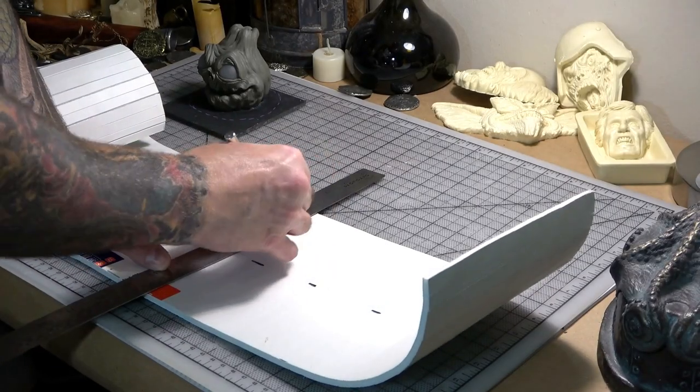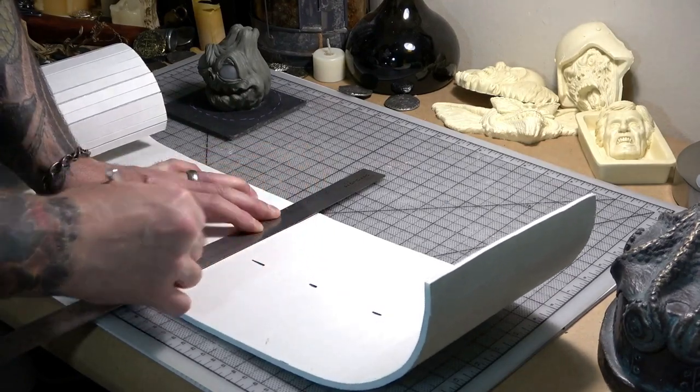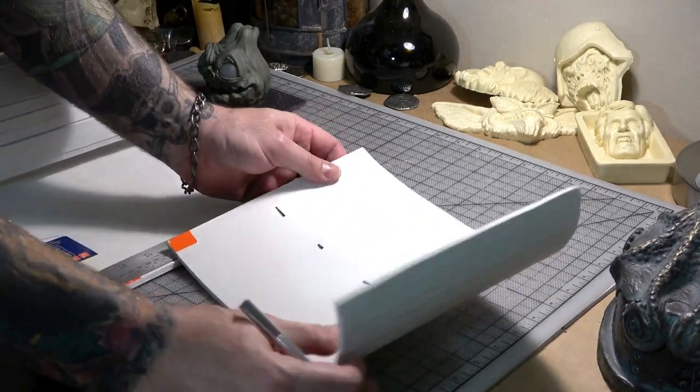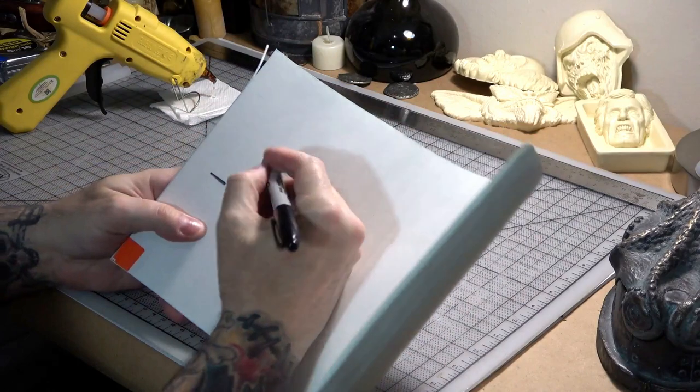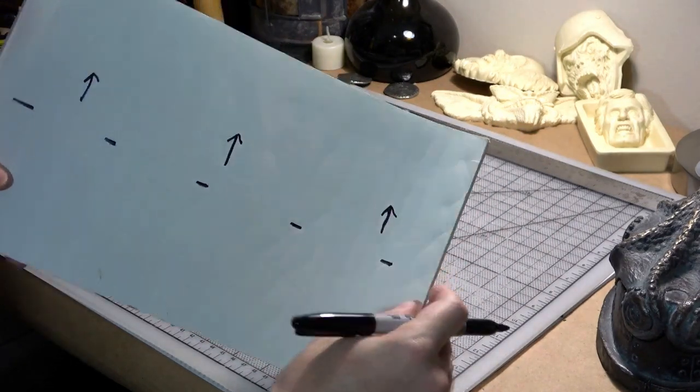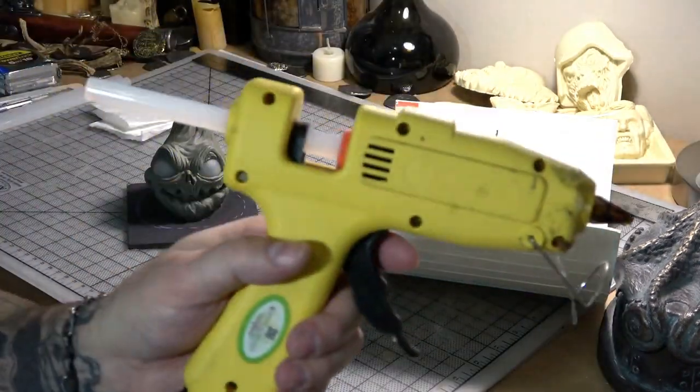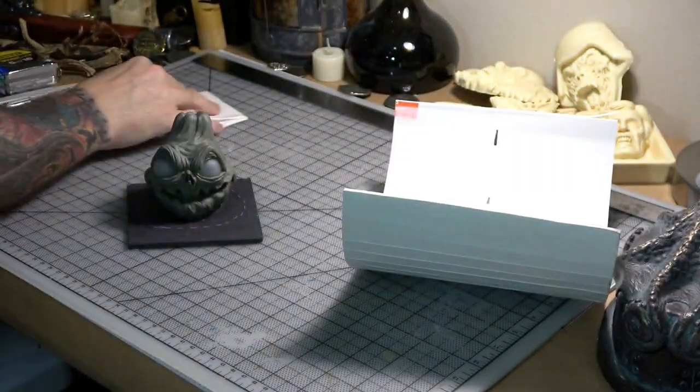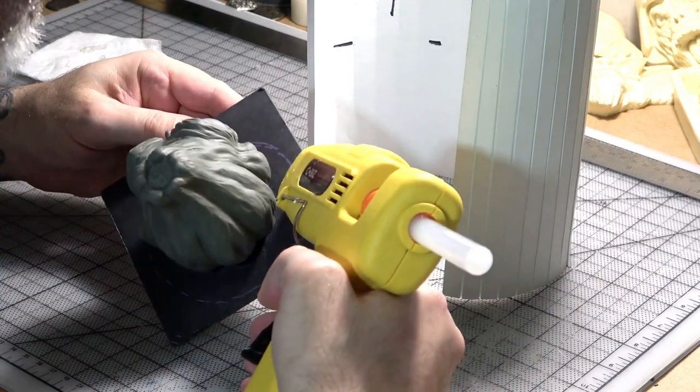Then I trim off a section long enough to wrap around our sculpture, and I draw some arrows showing which way is up. Because if you accidentally glue these walls upside down, your fill lines will be in the wrong place. Now it's time to glue the walls to the base using a glue gun.